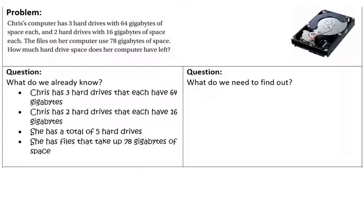Chris's computer has three hard drives with 64 gigabytes of space each, and two hard drives with 16 gigabytes of space each. The files on her computer use 78 gigabytes of space. How much hard drive space does her computer have left? Now I'm thinking to myself, what is hard drive? Well, look, there's a little picture of it on the side here, and hard drive is where files are stored inside your computer. It's kind of like the computer's memory card.